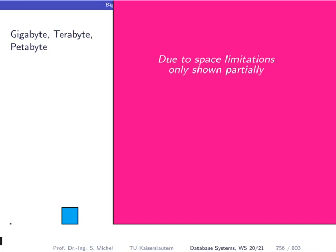To illustrate how big a petabyte is: there's a small dot on this slide representing a gigabyte, a larger representation for a terabyte, and here we see only a part of the depiction of one petabyte. This is really a lot of data, and you can see visually just how large a petabyte is.